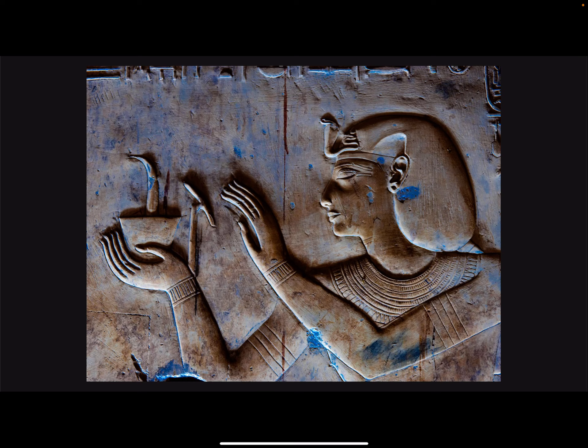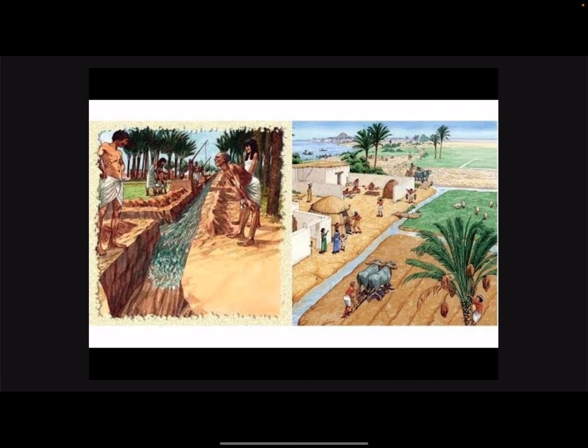The most famous of these cultures is of course Ancient Egypt. Ancient Egyptian civilization began around 3100 BC. Ancient Egyptians heavily relied on the Nile River, which was the vital source of fertile soil in the region, allowing for the development of agricultural and even irrigation systems.